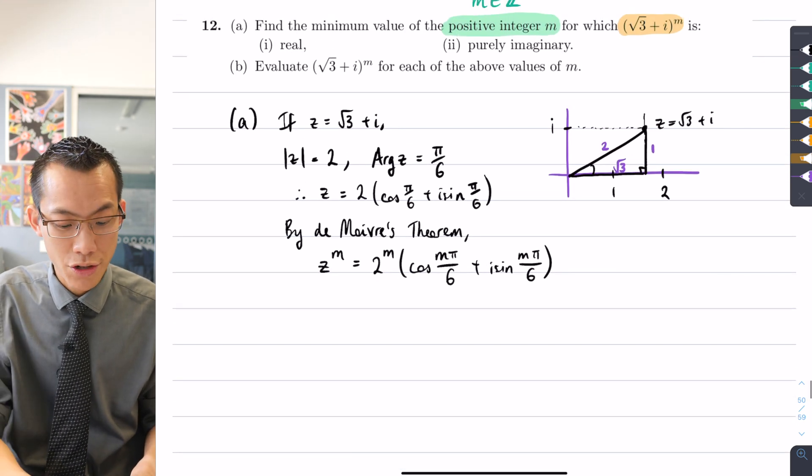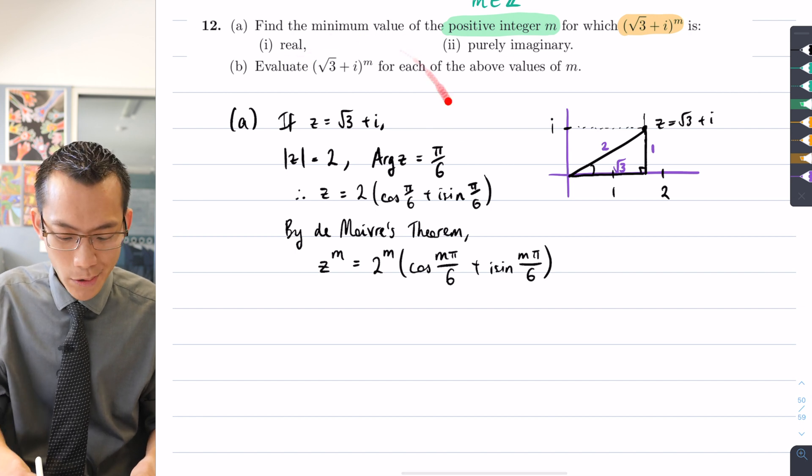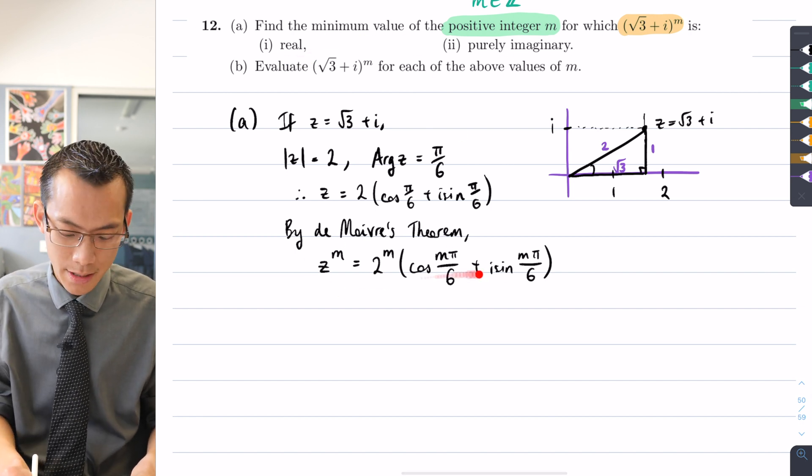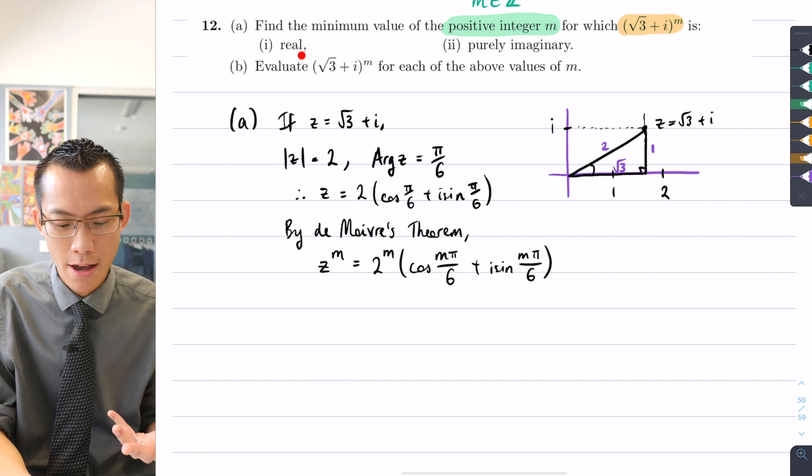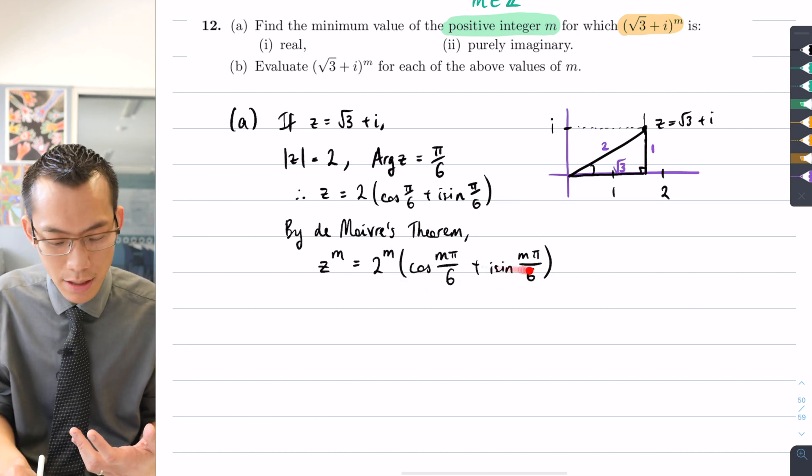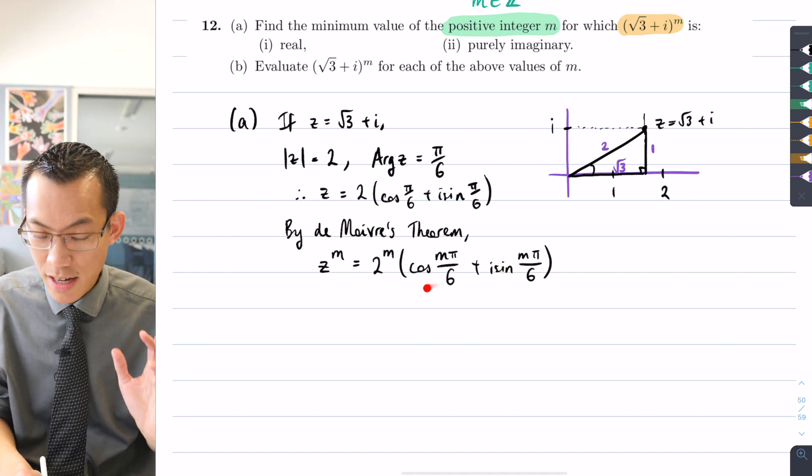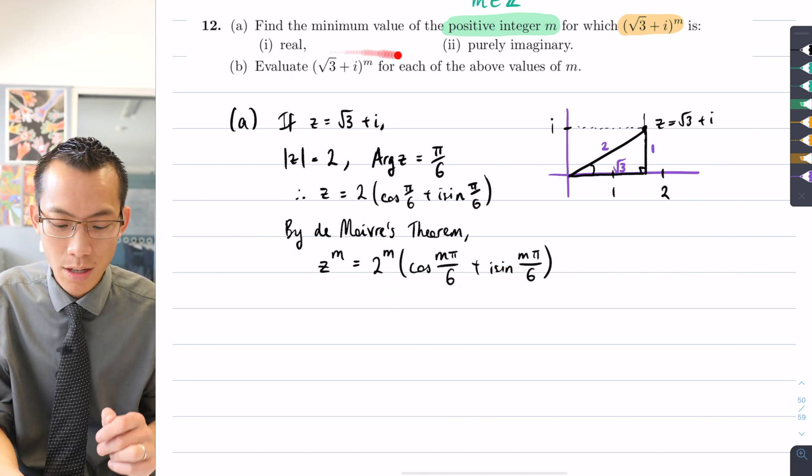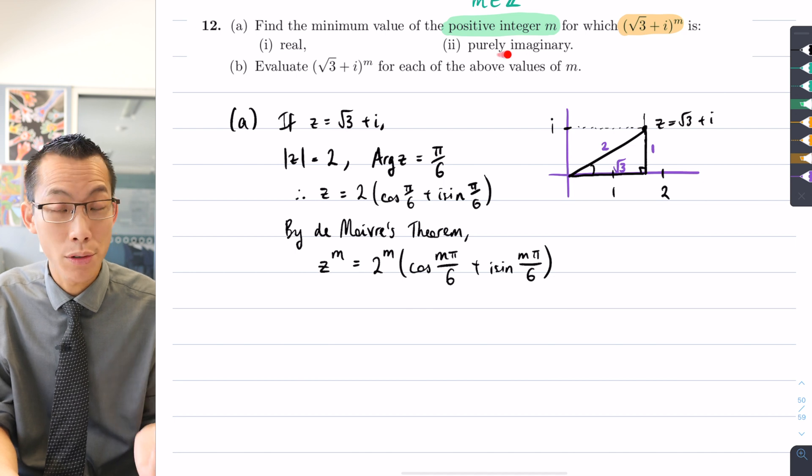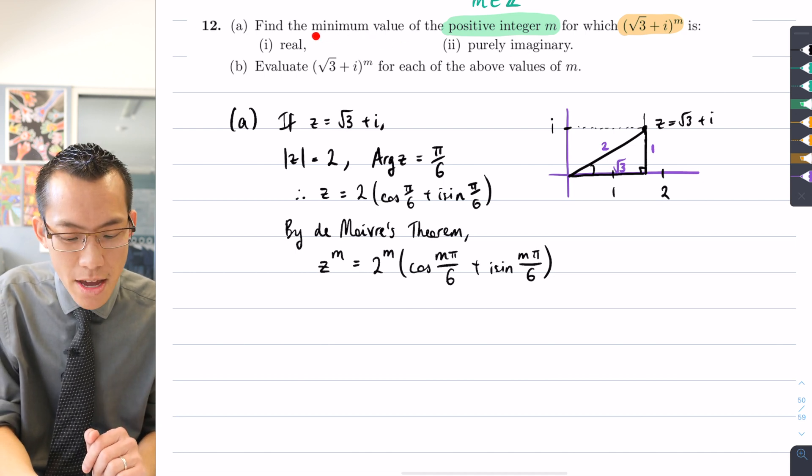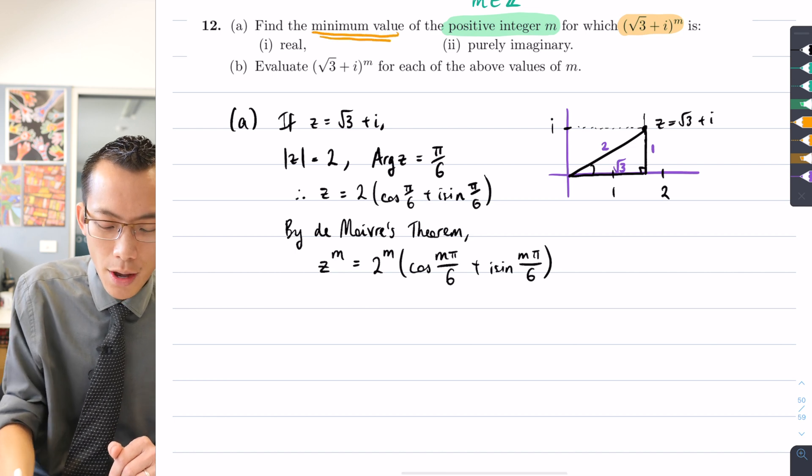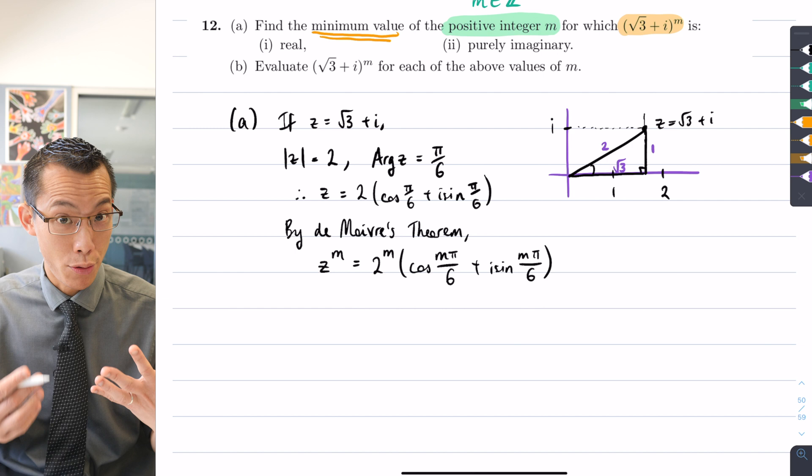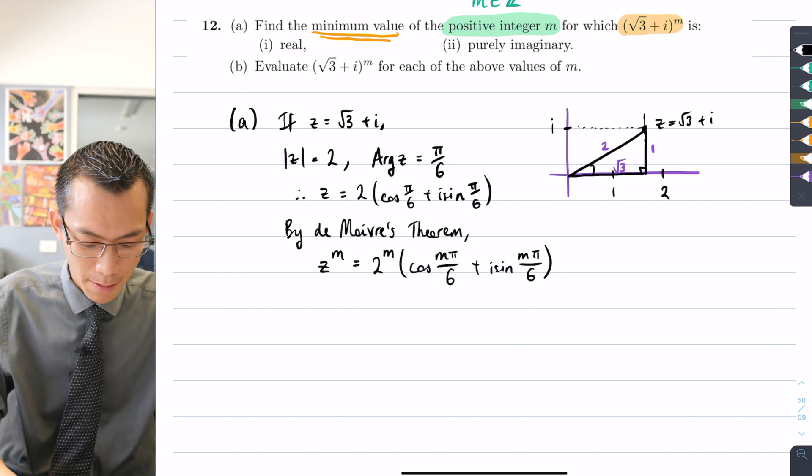How is it useful to the actual question they're asking us? We want to find when this expression is just real. What values of m will make it real, and what values will make it purely imaginary? I want the minimum value that gives me a real result or a purely imaginary result.